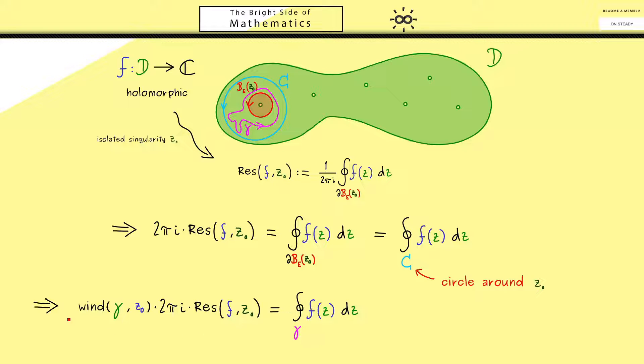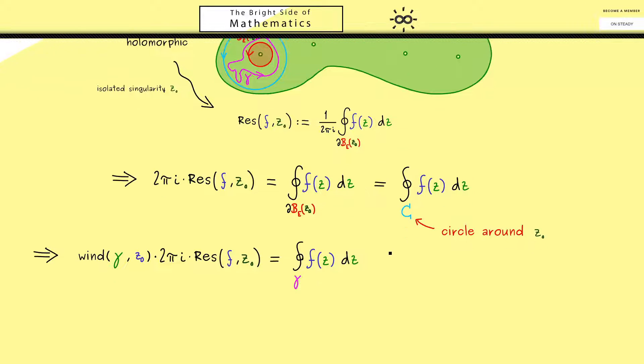So you see we already have a nice formula for calculating closed curve integrals for some curves gamma. And now the only question is can we generalize this fact when the curve gamma surrounds more singularities. And indeed this is exactly the claim for the residue theorem.